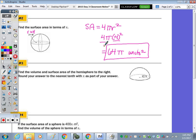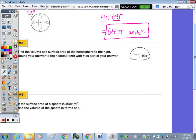Down to the hemisphere. Find the volume and surface area of the hemisphere to the right. Round your answer to the nearest tenth with pi as part of your answer. So for a hemisphere, the volume is going to be one-half of 4/3πr³. And one-half of 4/3 is 2/3.